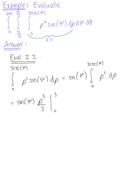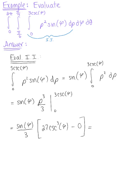This integrates to sine of phi multiplied by rho cubed over 3, evaluated from 0 to 3 cosecant of phi. Plugging in, we get sine of phi times (1/3) times (3 cosecant of phi) cubed. So 3 cubed gives us 27 cosecant cubed of phi, minus 0, leaving us with 9 times sine of phi times cosecant cubed of phi.